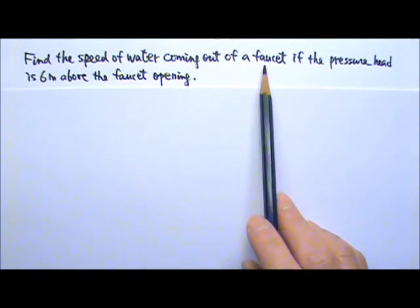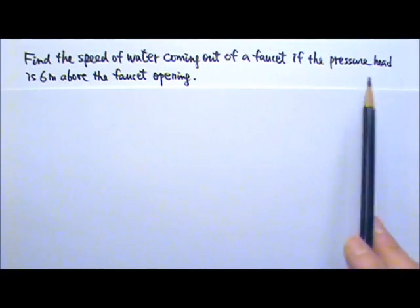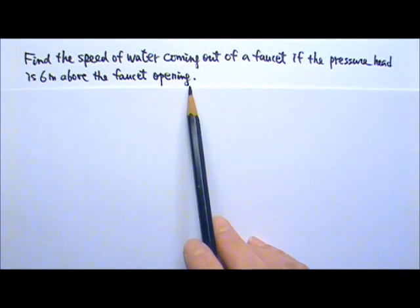Find the speed of water coming out of a faucet if the pressure head is 6 meters above the faucet opening.